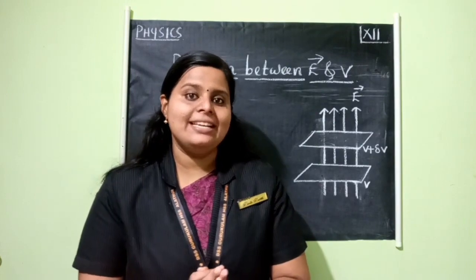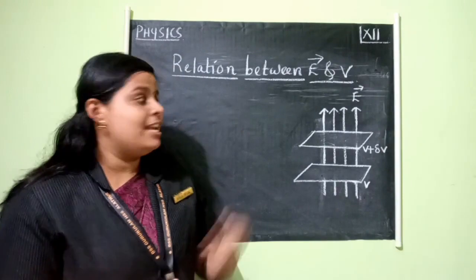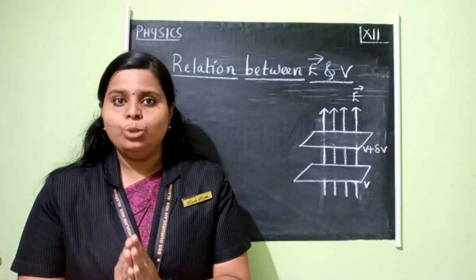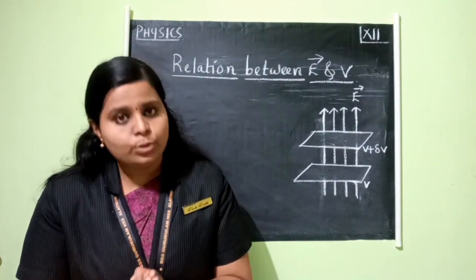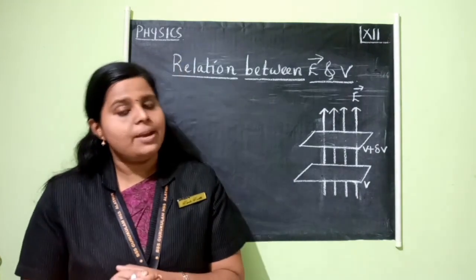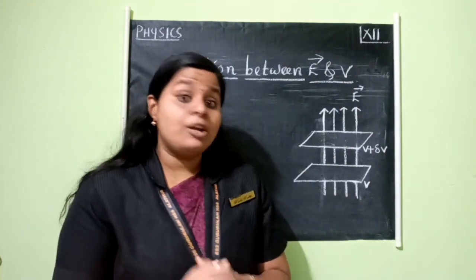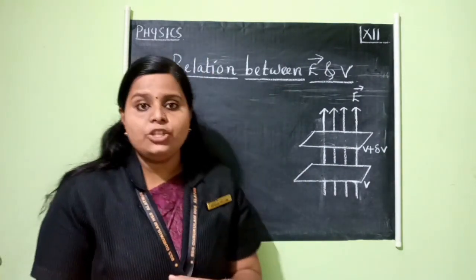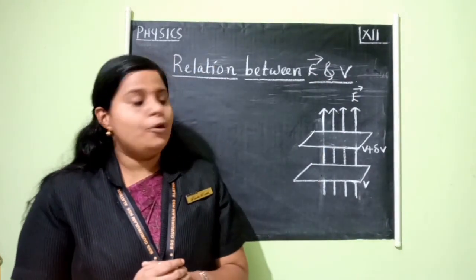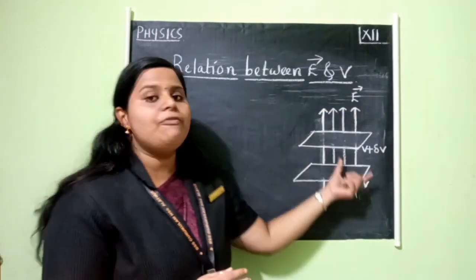Now let's get into the next topic — the relation between electric field and electrostatic potential, that is, the relation between E and V. There is a relation between electric field and the electrostatic potential. Here we are going to derive the relation between electric field and the electrostatic potential. For that, we can consider equipotential surfaces for a uniform electric field.